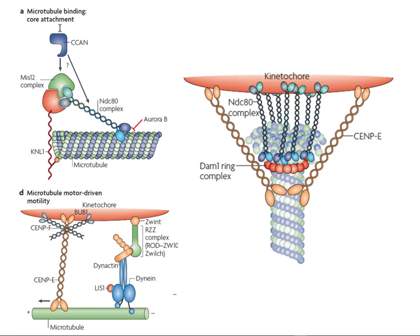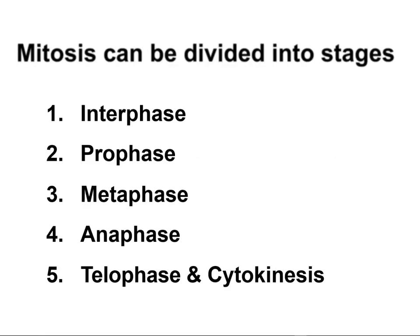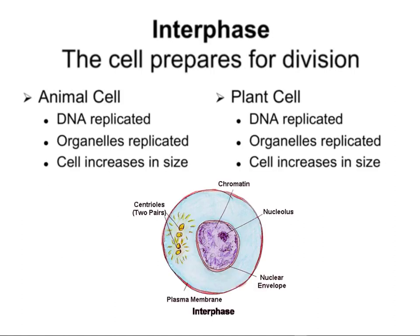Mitosis is the process of division where we get two daughter cells that are identical. It's broken up into interphase, prophase, metaphase, anaphase, and telophase. These are the important stages we needed to talk about today. It's really quite understandable once you see the steps laid out, and all of this we've already mentioned. This now steps into a little more detail so I can compare animal and plant cells.